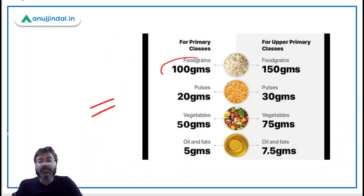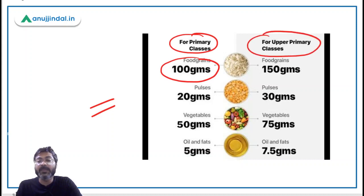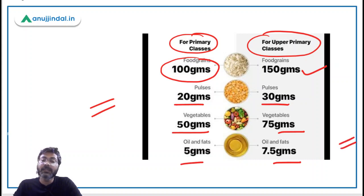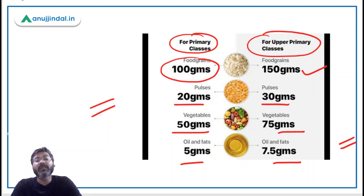The food grain intake is 100 grams for primary classes and 150 grams for upper primary. Pulses are 20 grams and 30 grams respectively. Vegetables are 50 grams for primary and 75 grams for upper primary. Oils and fats are 5 grams and 7.5 grams respectively. You can take a screenshot of these nutritional requirements as per the Midday Meal Scheme.